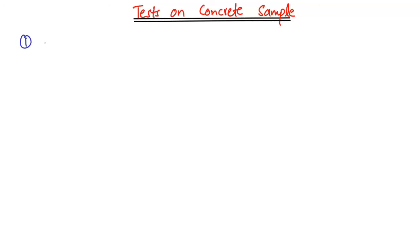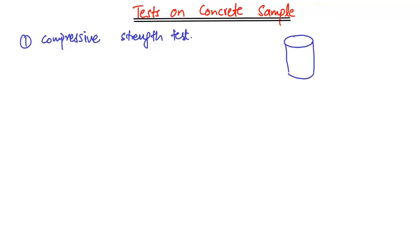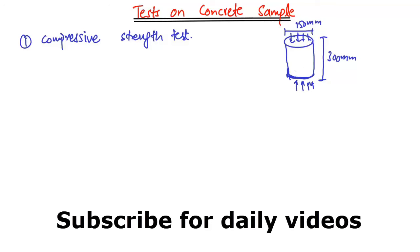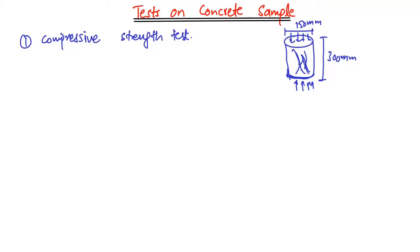One of the most important tests on concrete is the compressive strength test. This is performed on a concrete cylinder — one standard dimension is 150 millimeters in diameter and 300 millimeters in height. A load is applied under compression from both top and bottom until failure, and the failure behavior depends on the concrete mixture.